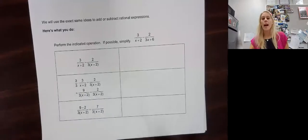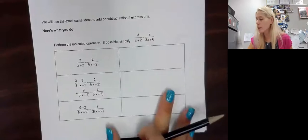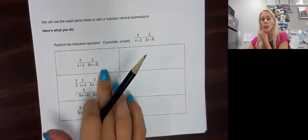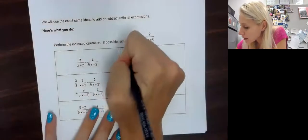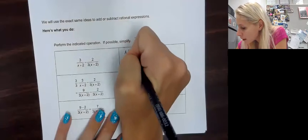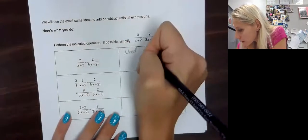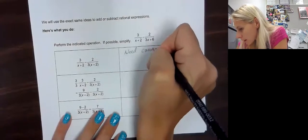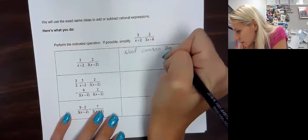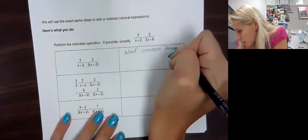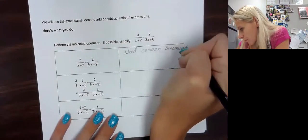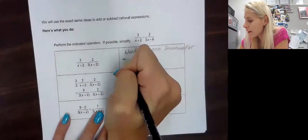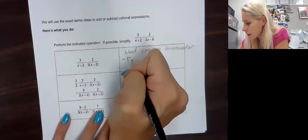Here I have an example for you. I'll explain each step. We have a subtraction, and we need a common denominator. So the first thing we're going to do is factor first.